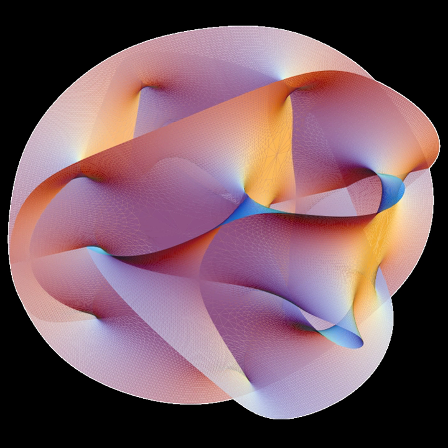In algebraic geometry, a moduli space is a geometric space, usually a scheme or an algebraic stack, whose points represent algebra-geometric objects of some fixed kind, or isomorphism classes of such objects.